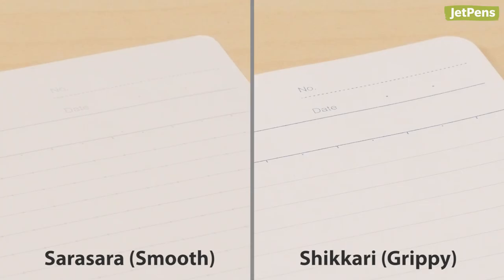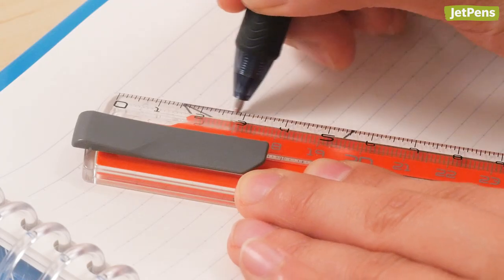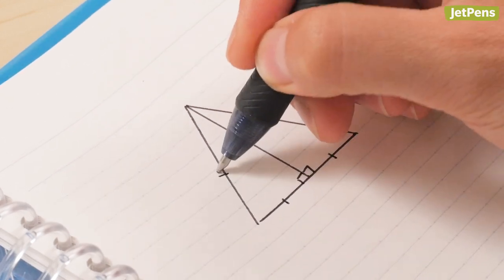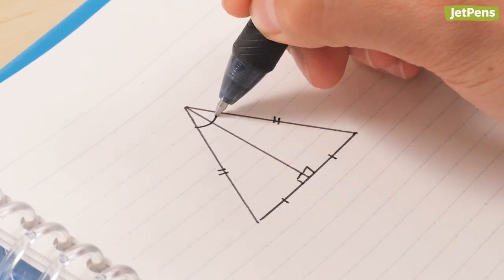Kokuyo Campus loose leaf paper comes in two types: smooth Sara Sara paper and grippy shikari paper. The Sara Sara also boasts the unique dotted line rule designed specifically for organized note-taking.